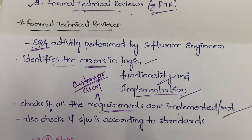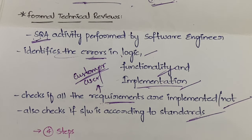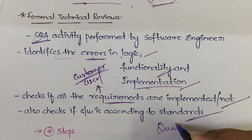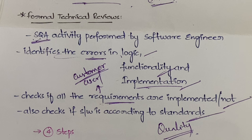FTR also checks whether the software is according to the standards — for example, ISO standards. We need to maintain minimum standards in our software to ensure quality, so FTR verifies compliance with those standards. In formal technical review, it is not done randomly; you need to follow a sequence of steps.